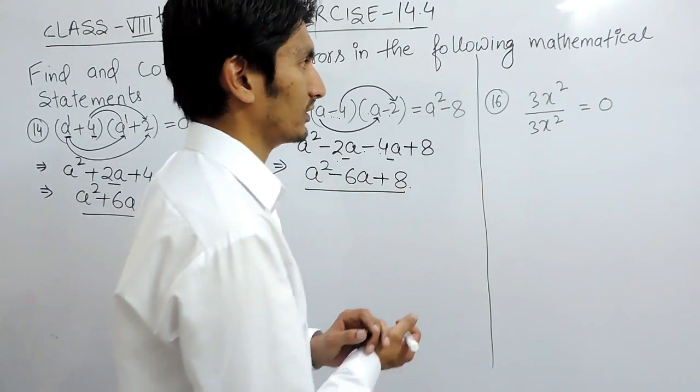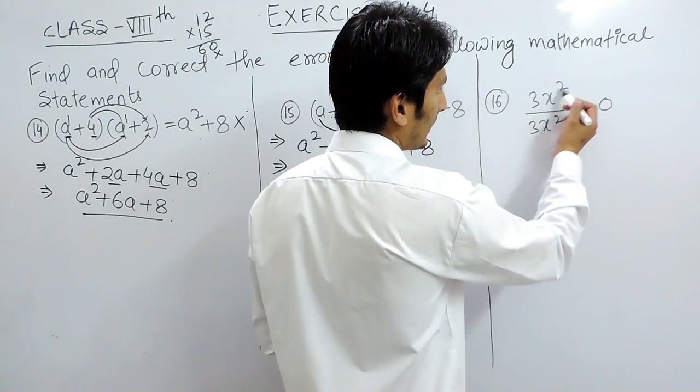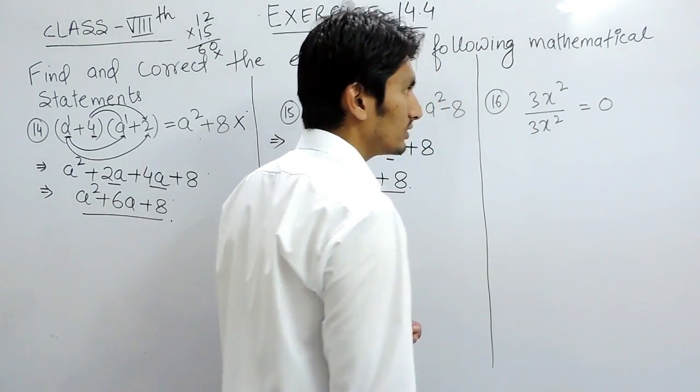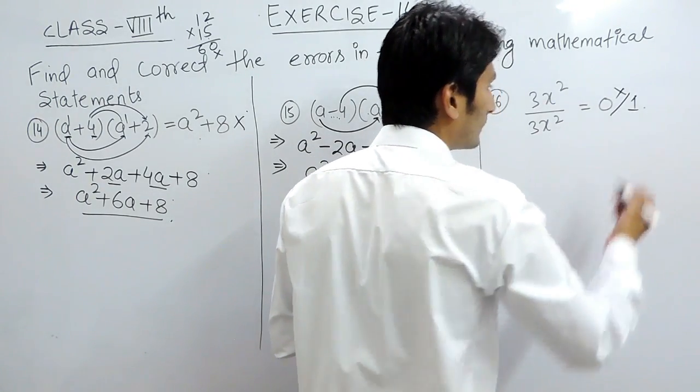Now let's solve question 16. In this case, it is given that 3x square upon 3x square when cancelled out is given as equals to 0. But the answer should be 1, not 0.